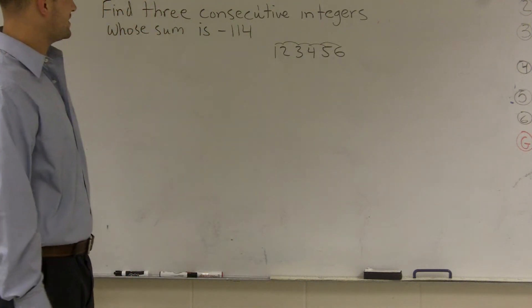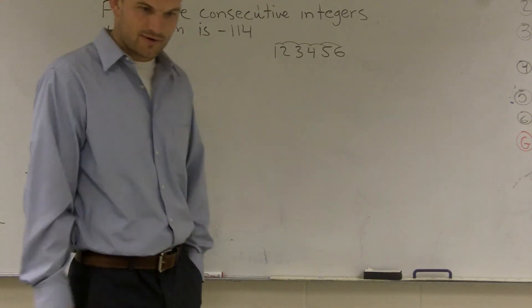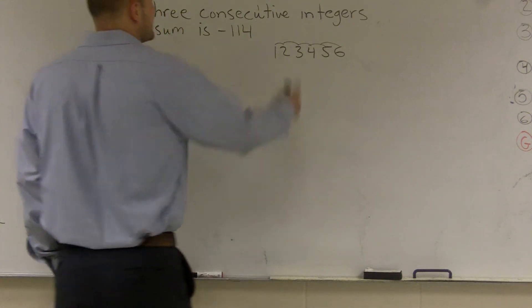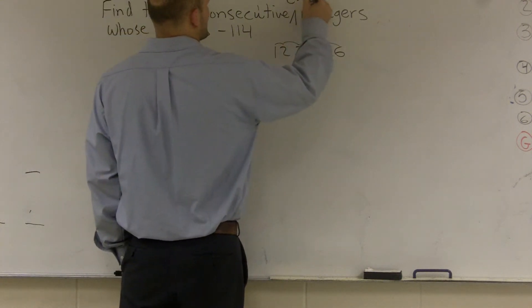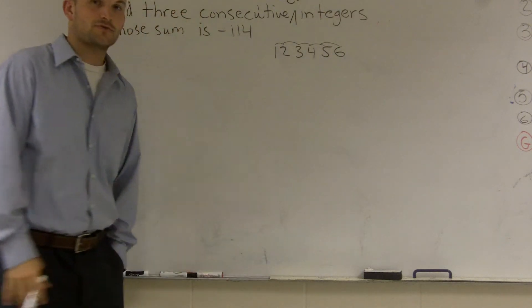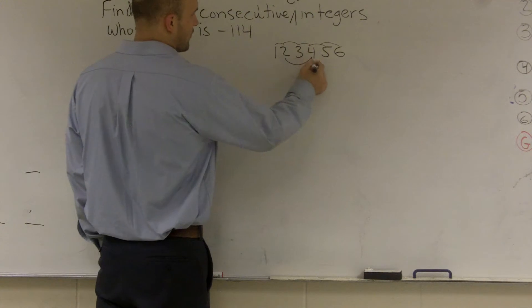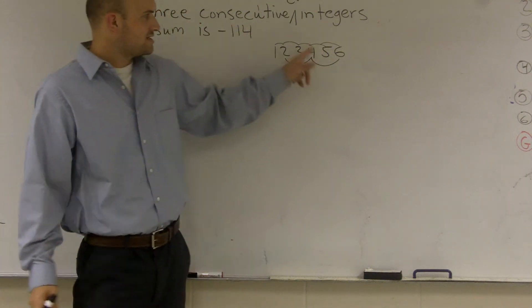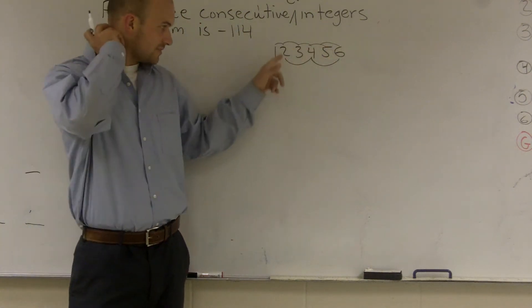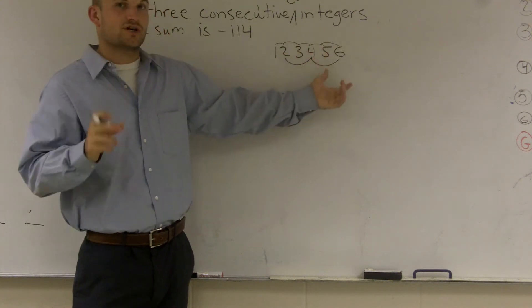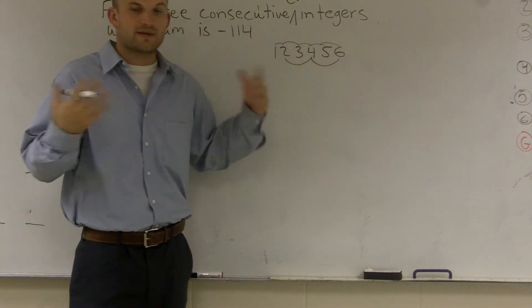Now the next thing is find three consecutive, I don't think I wrote this down right. Yes, I did. Let's call it even numbers. So let's do three consecutive even numbers. So therefore, I need to do two, four, and six. See how these are consecutive even numbers? There are even numbers right next to each other as far as the next even number would be consecutive.